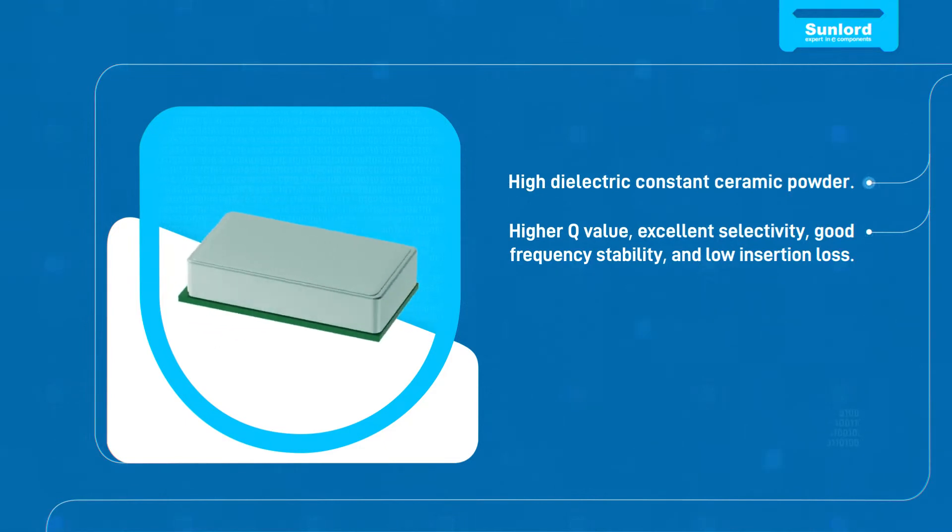The electromagnetic wave resonance occurs within the dielectric material, making it smaller in volume and lighter in weight compared to metal cavity filters. It also boasts higher Q value, excellent selectivity, good frequency stability, and low insertion loss, making it the mainstream choice for 5G base station filters.